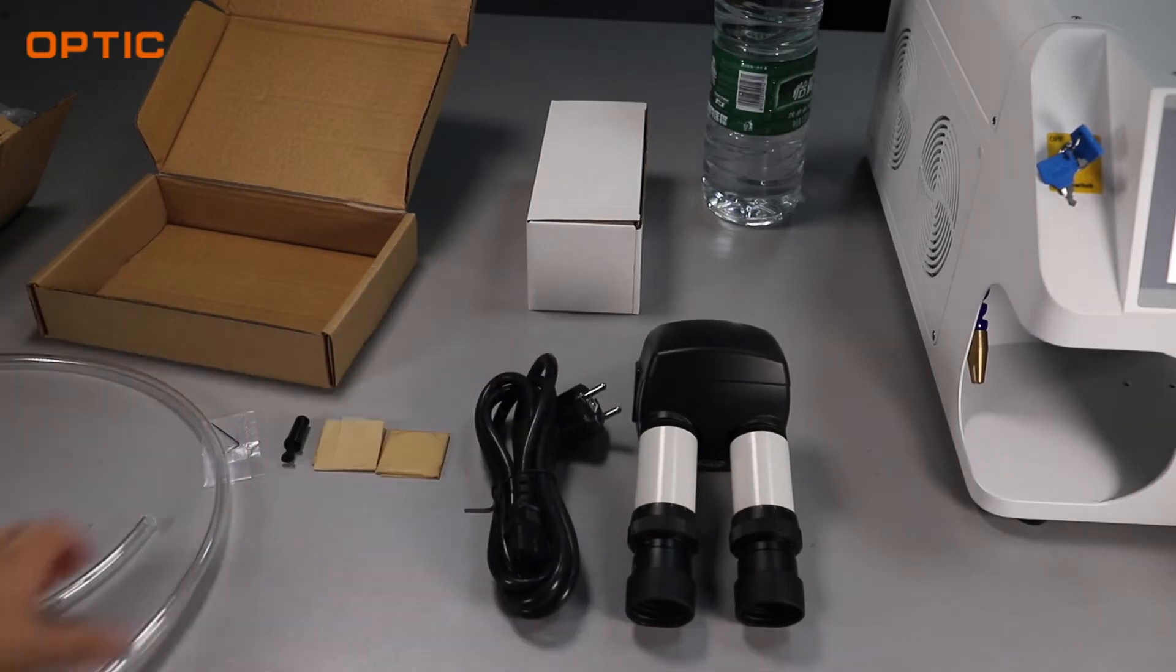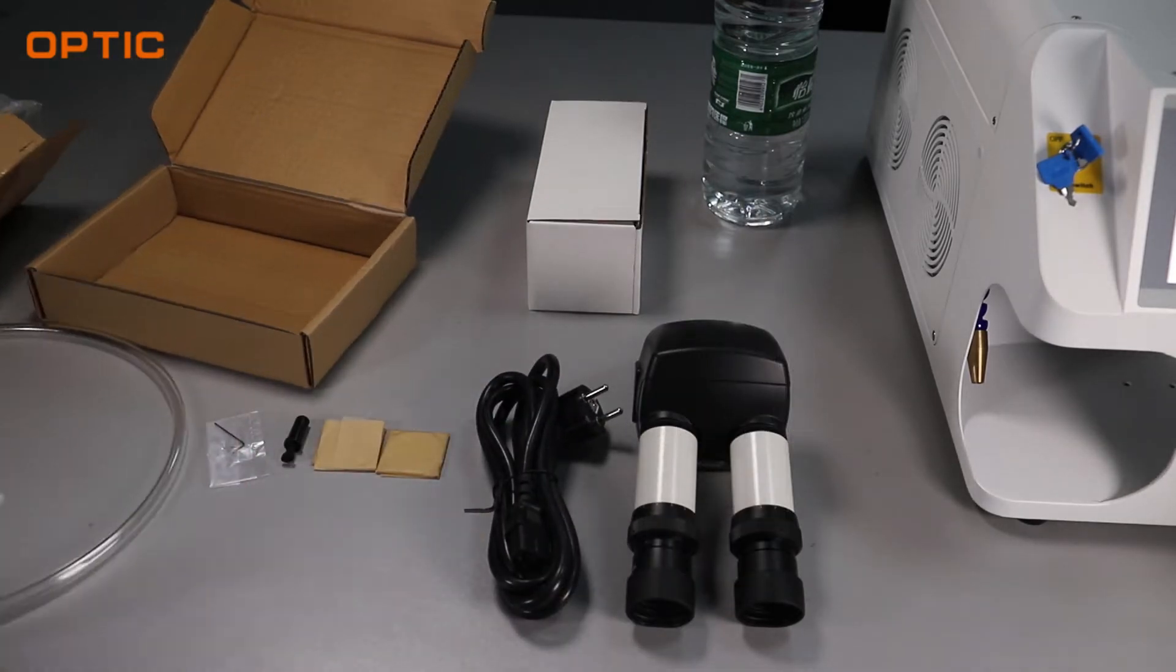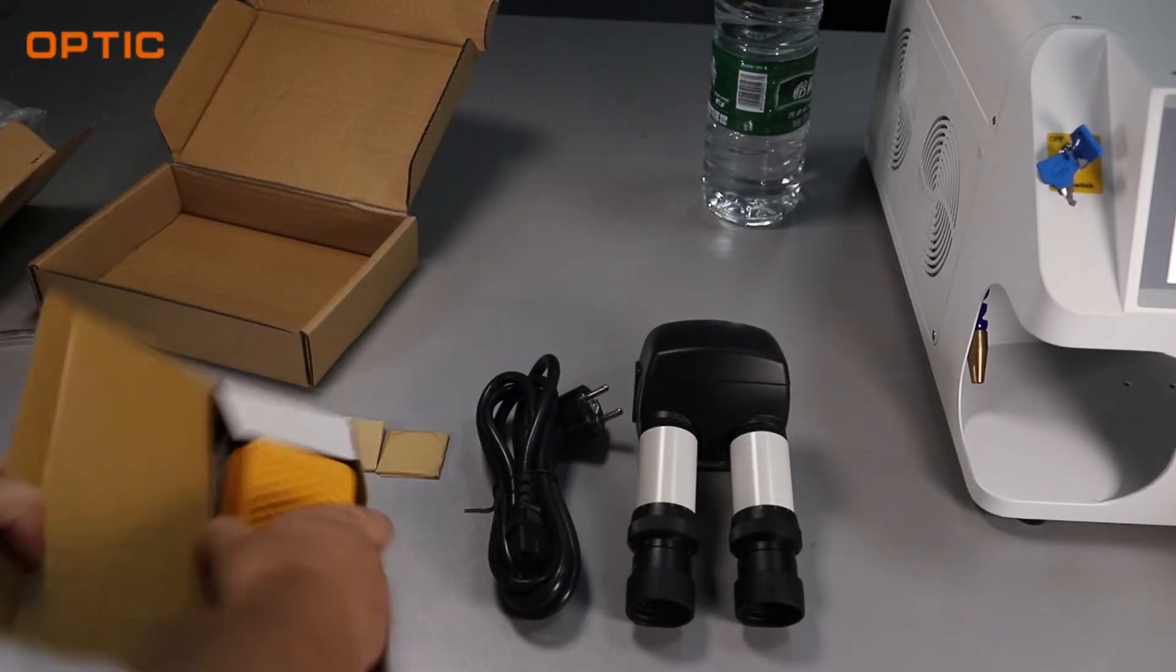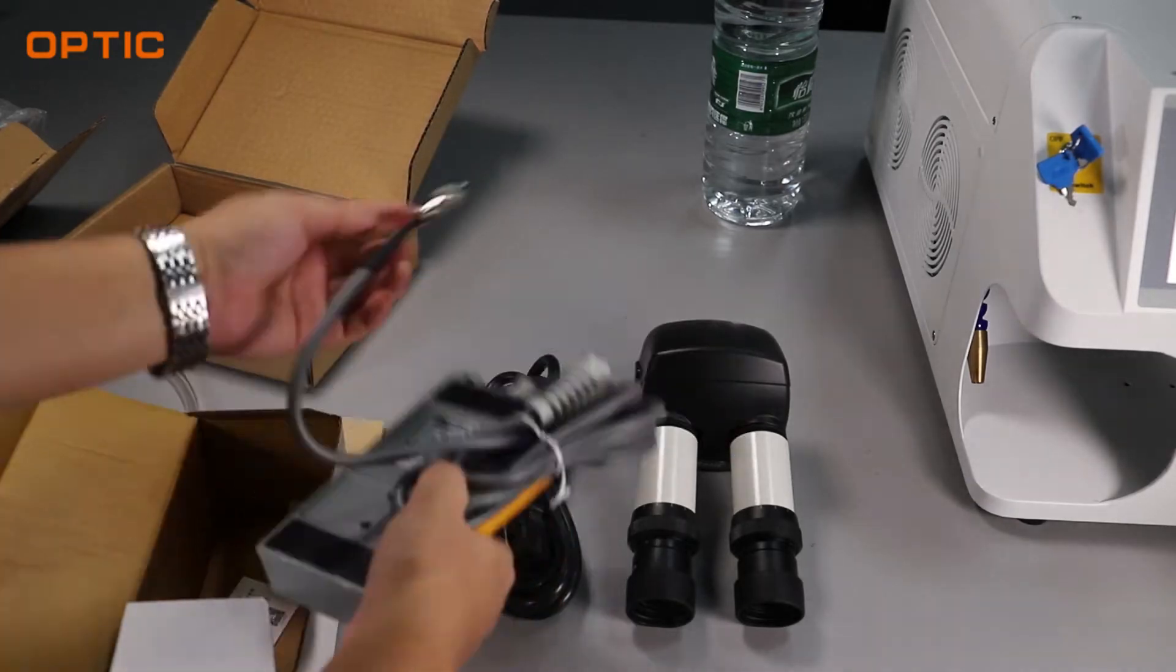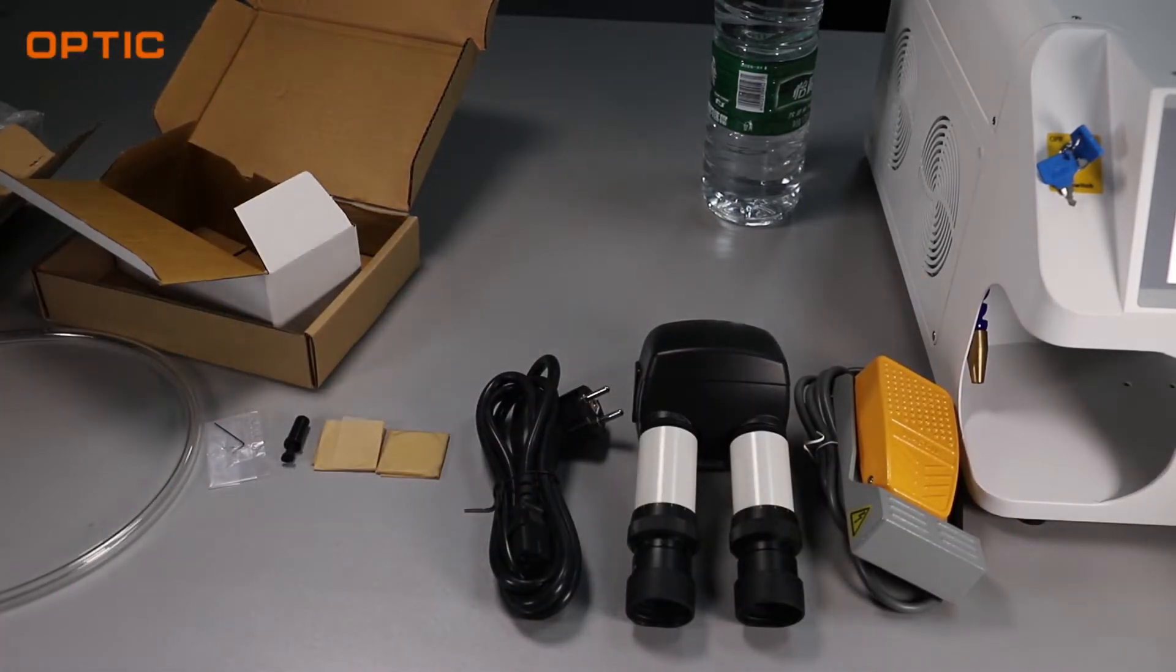Number 1 Microscope Wood 10X. Number 2 Power Supply Cable, Protection Lens and Tools. Number 3 Footswitch and Plastic Water Tube.